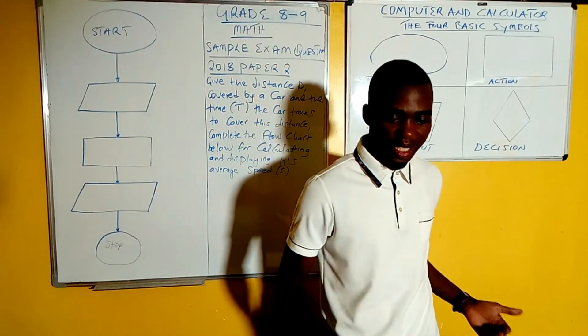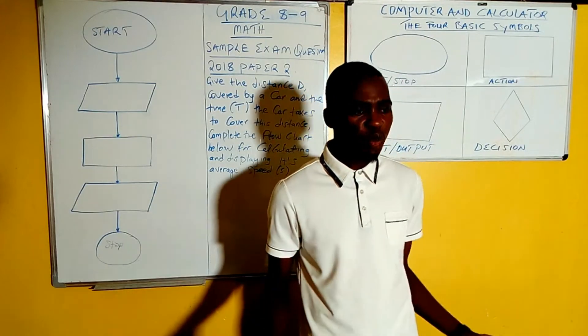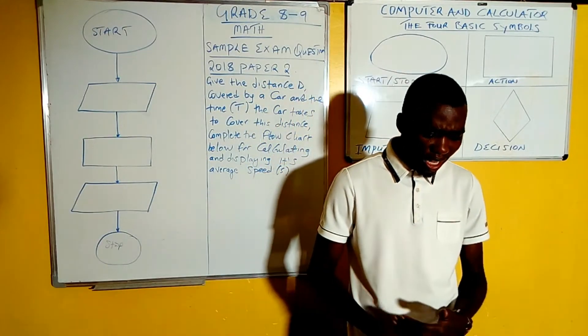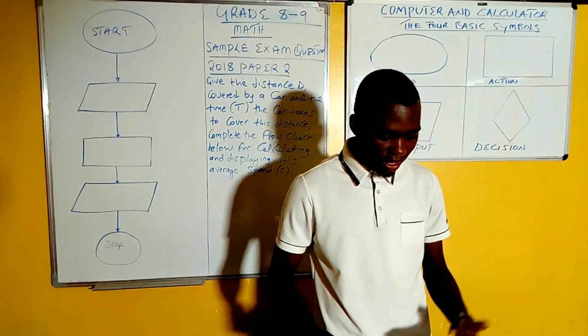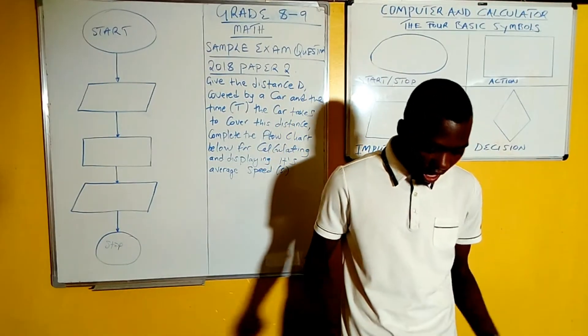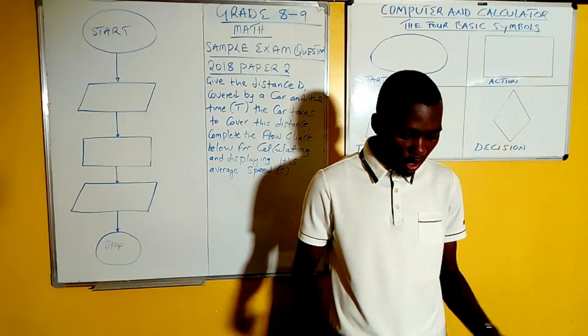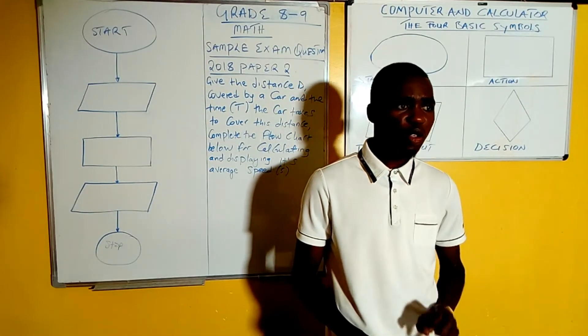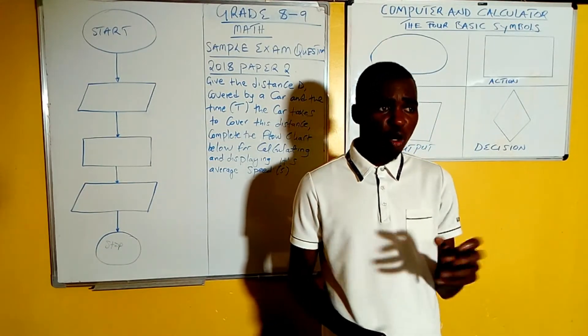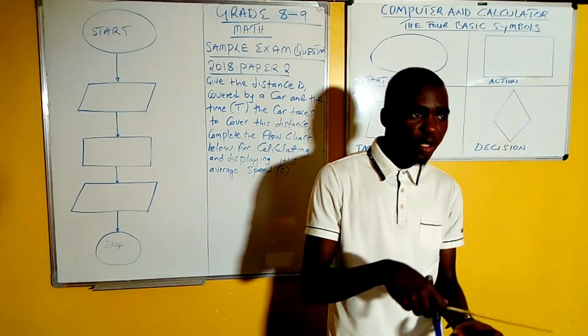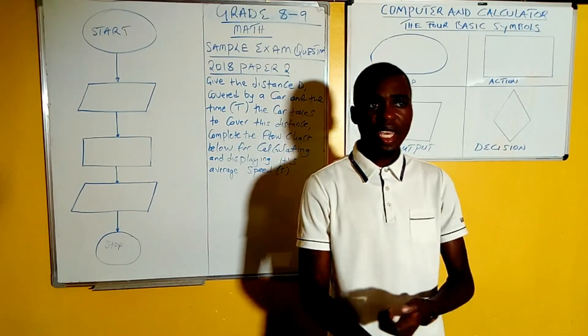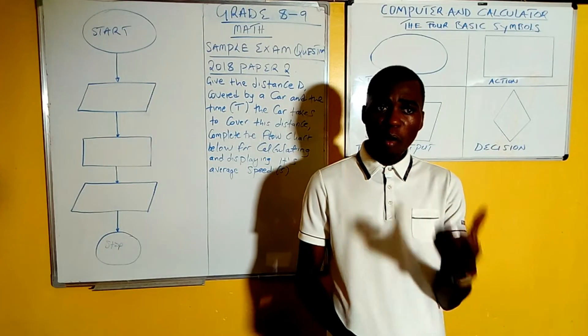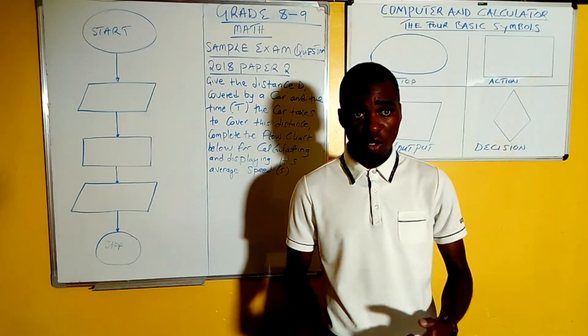To begin with, a computer is simply an electronic device that is capable of accepting data, processing it, and giving it out or storing it for the future. For example, a laptop can receive information, process it, and store it. Even a mobile phone is also a computer.